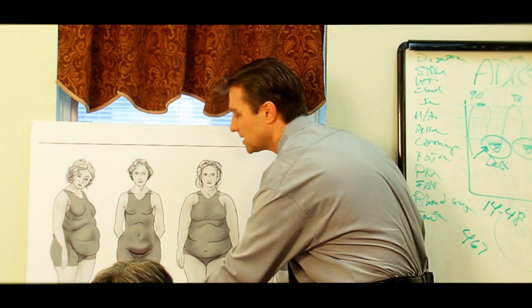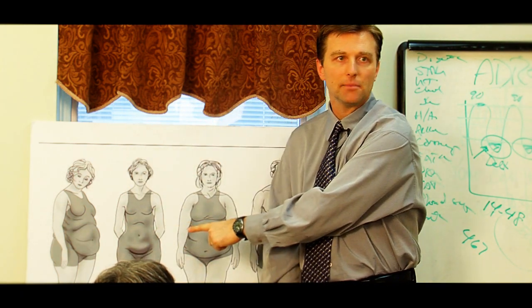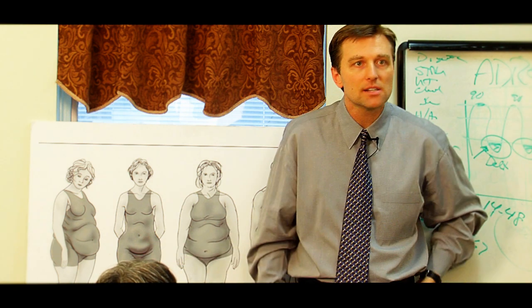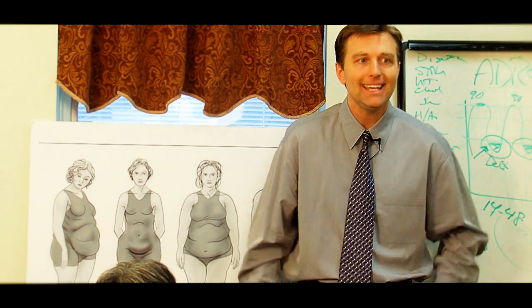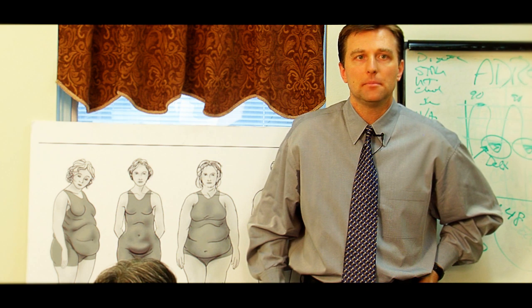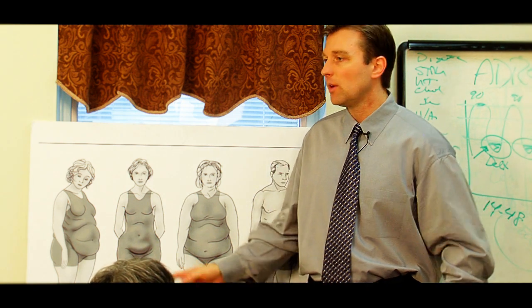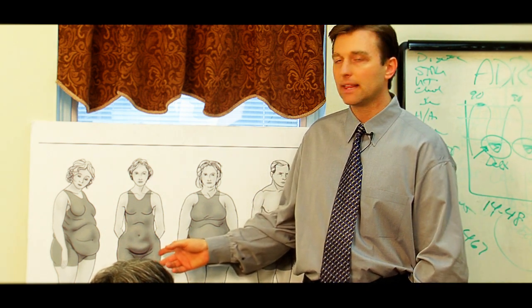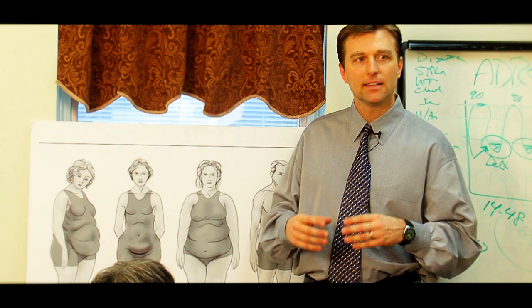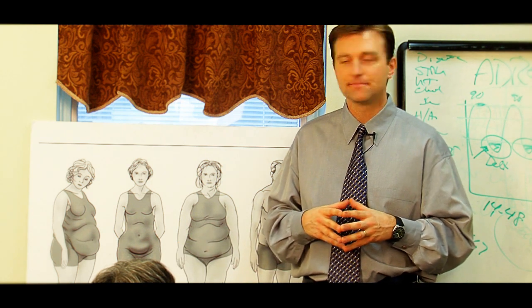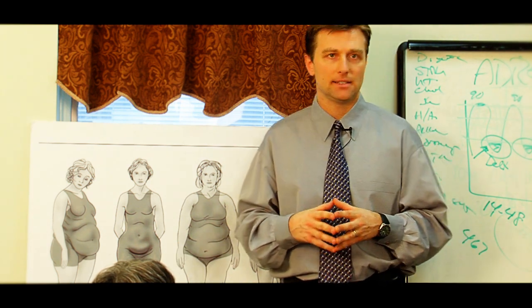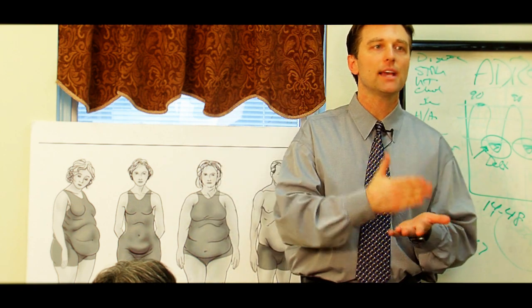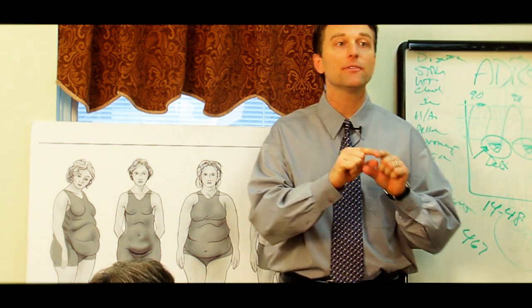The next body type would be this body type. This is the ovary body type. Take a look where the weight is. It's down here, a saddlebag, hip weight, ovary. Take a while to guess why I don't see very many men that look like that. They don't have ovaries. Saddlebag, that's estrogen. Estrogen makes fat superficially.